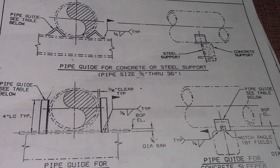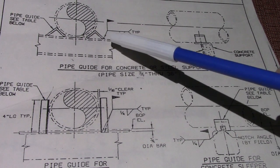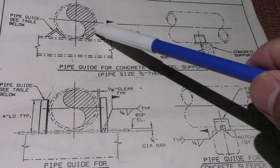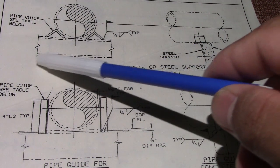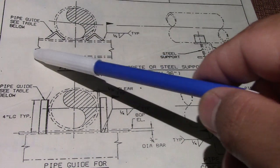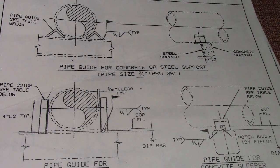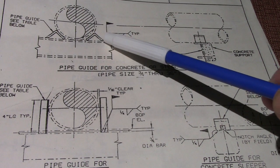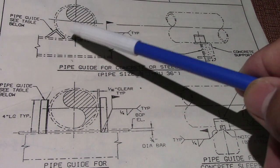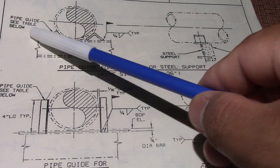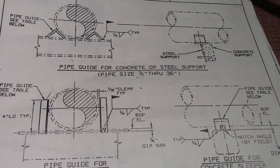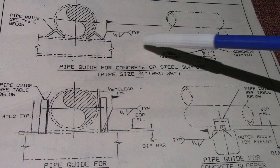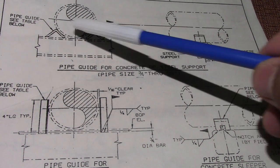From detail one, this is a front view of the I-beam, and of course this is the side view of the I-beam. We have also this triangle, which is a guide. You can read here: pipe guide — see table below. This is the example of a guide.